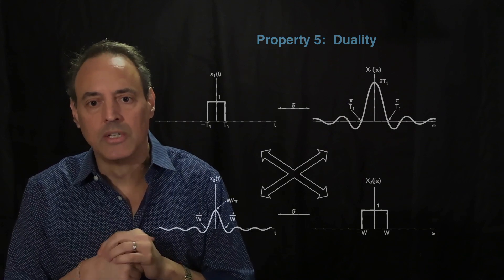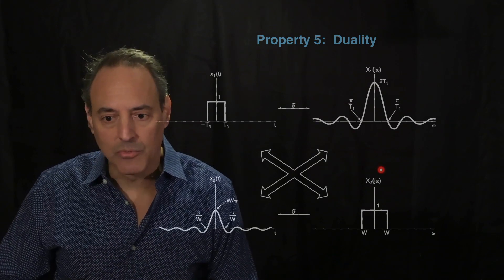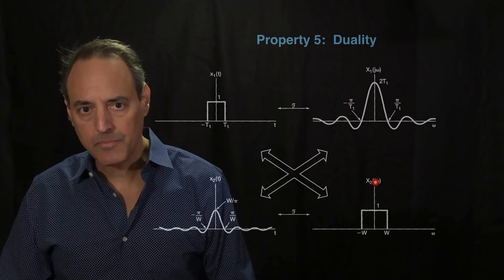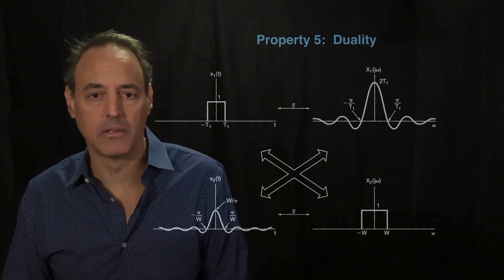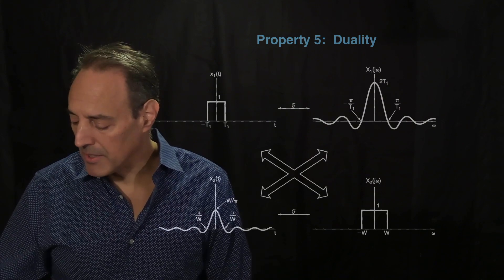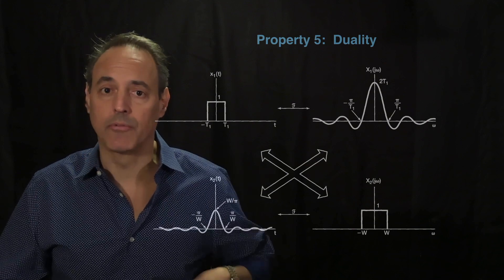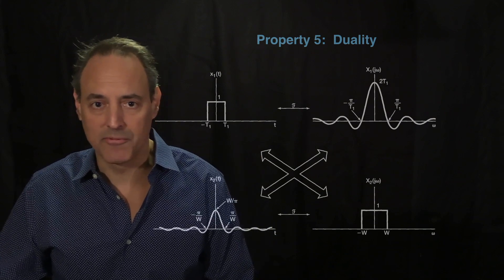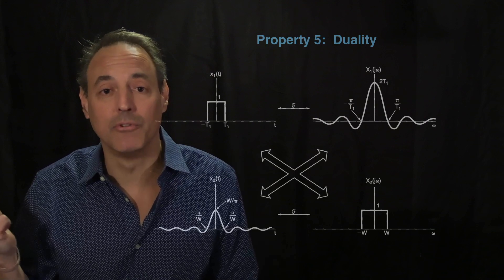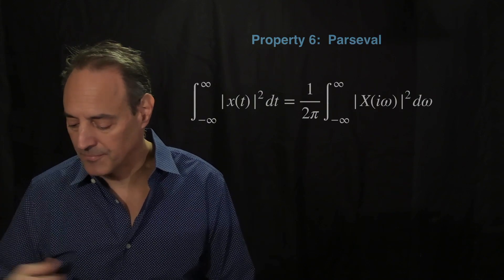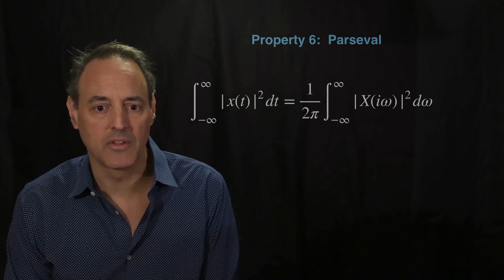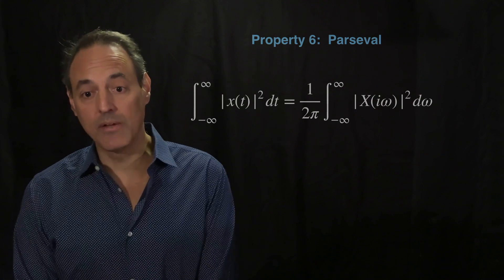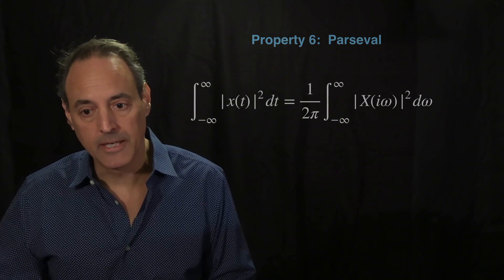This symmetry comes from the fact that going in you use e to the minus i omega t and coming back you use e to the plus i omega t. So duality means that if you have something that looks nice in the Fourier domain, you can figure out what it would take in the time domain to produce it. If you've worked out the Fourier transform of a function, you've effectively worked out the Fourier transform of what it looks like in the Fourier domain as well. Related to this is Parseval's relationship: the integral of the absolute value squared of the signal equals one over two pi times the integral over all frequency content.